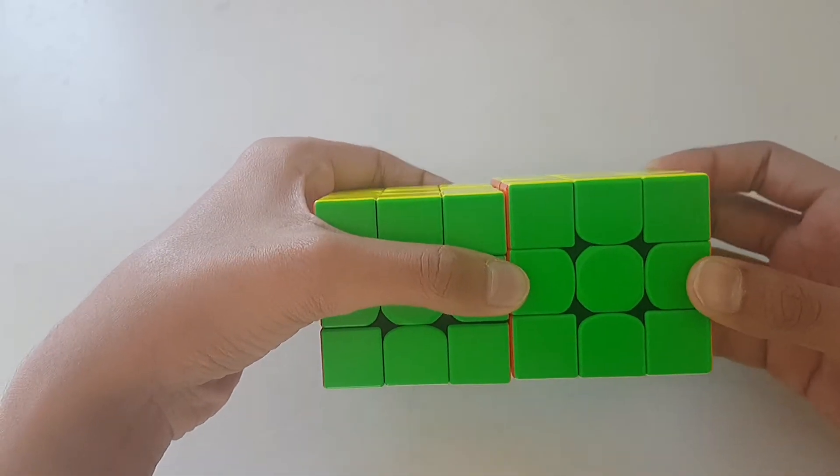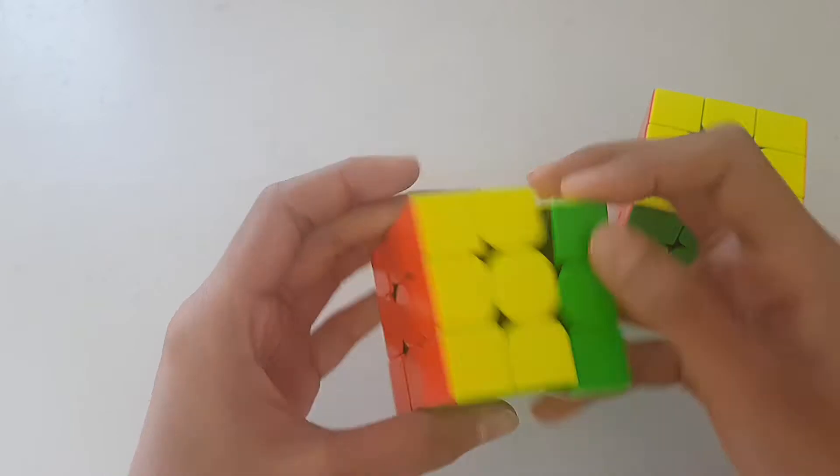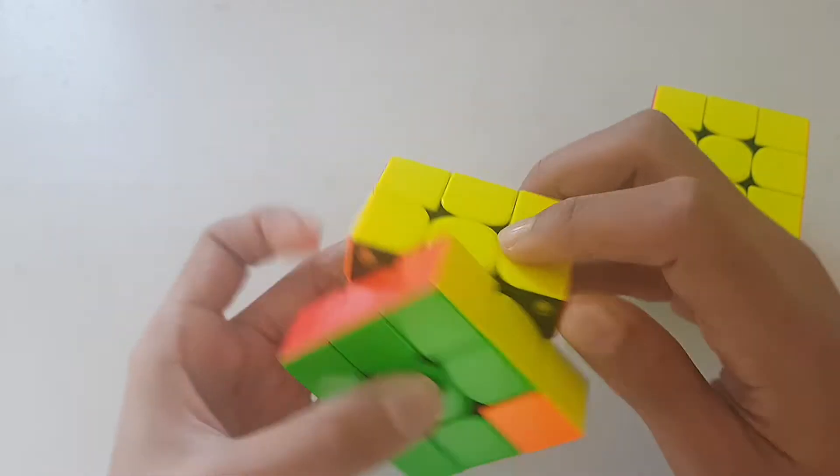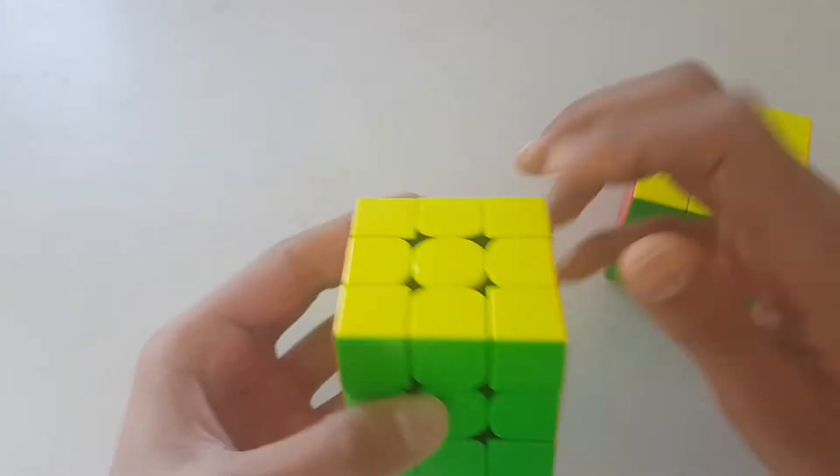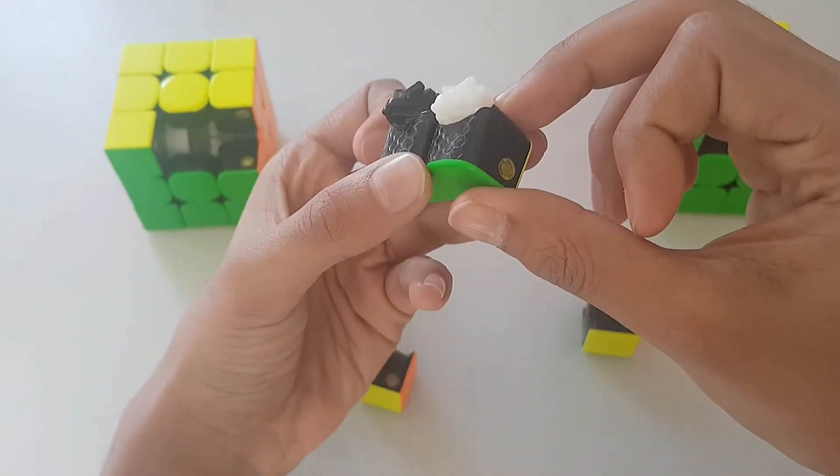But it might not sound that or look that big, but when you cube you can actually feel that whole difference. Looking at the pieces, the GAN Axis edge piece looks to be way bigger than the GAN 354 Version 2's edge piece.